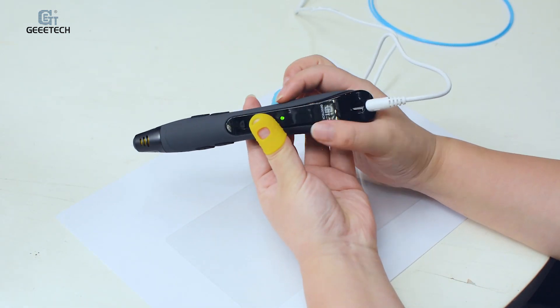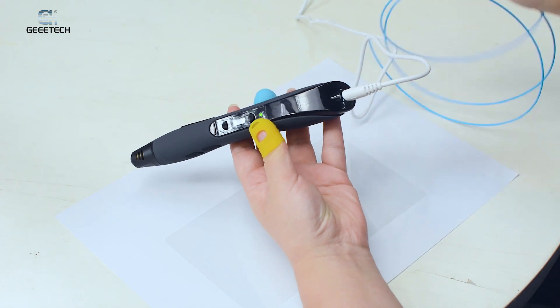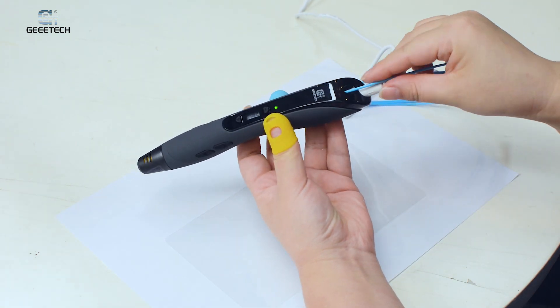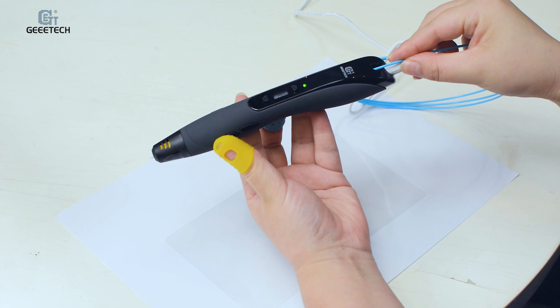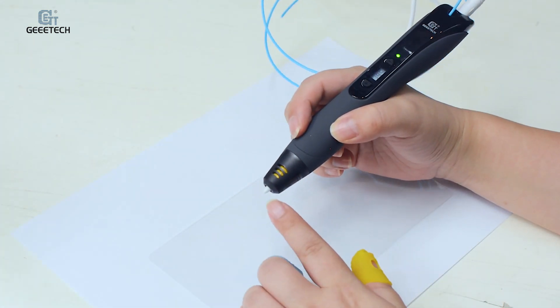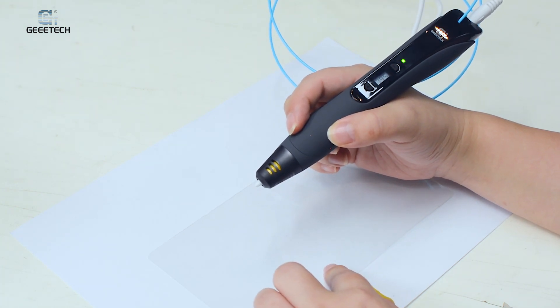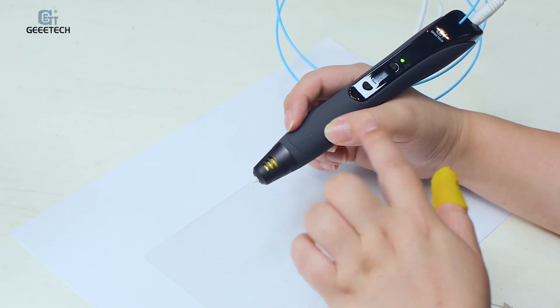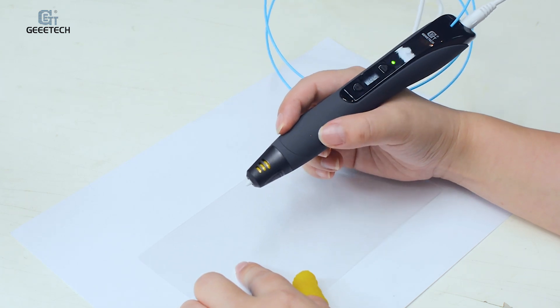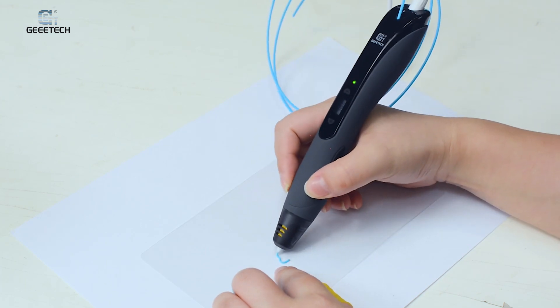Okay, now the next step is to load the filament from here. And press this button to load the filament. The nozzle will load the filament automatically. When it finishes, okay, it starts.